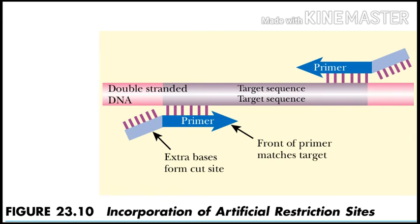Once a segment of DNA has been amplified by PCR, it may be sequenced or cloned. For cloning, it is often convenient to use restriction enzymes to generate sticky ends on both insert and vector. However, it is unlikely that such sites will be located just at the ends of any particular target sequence.